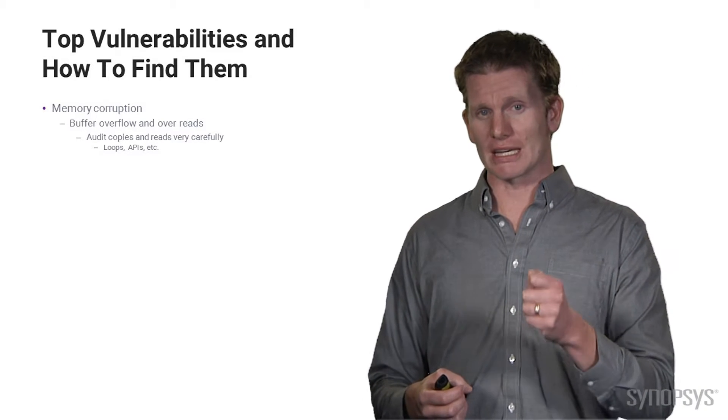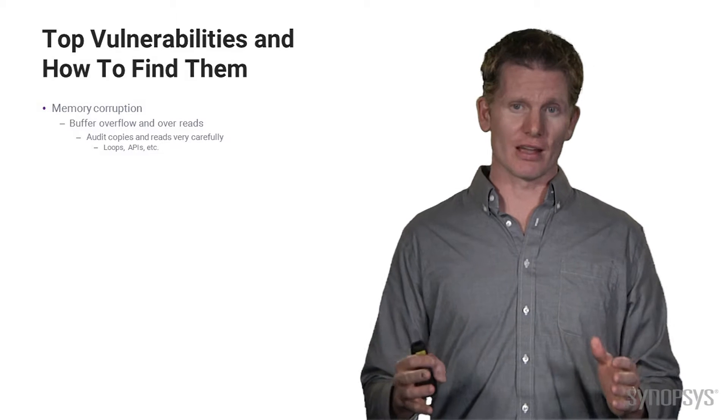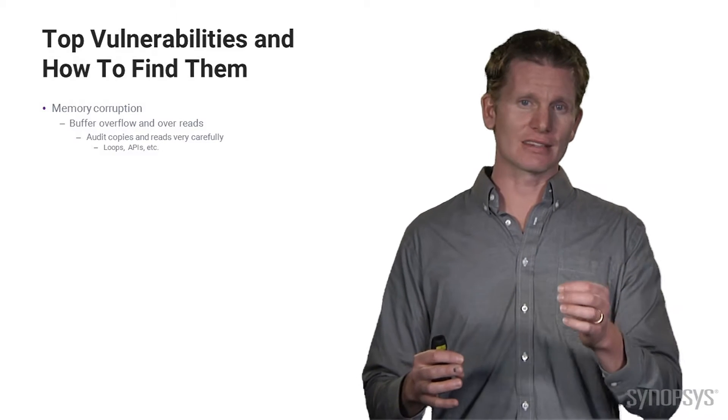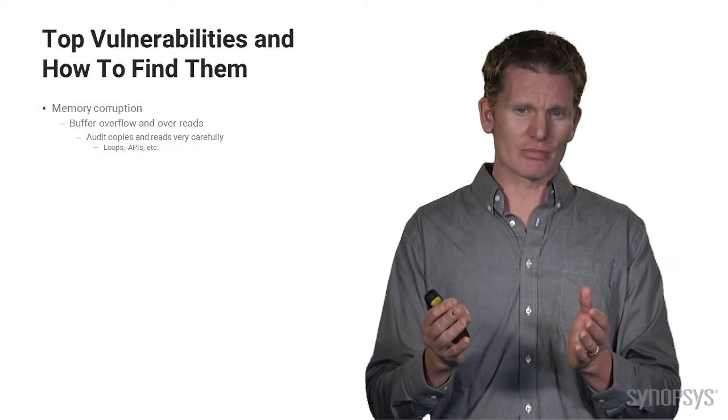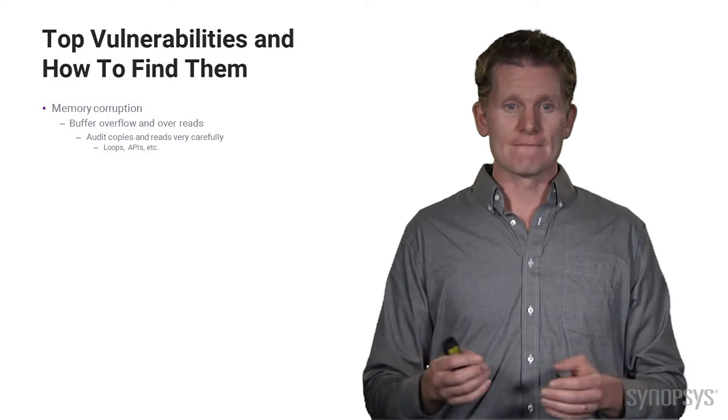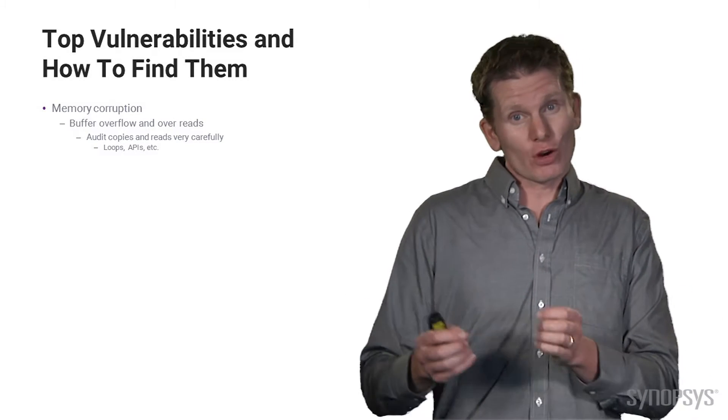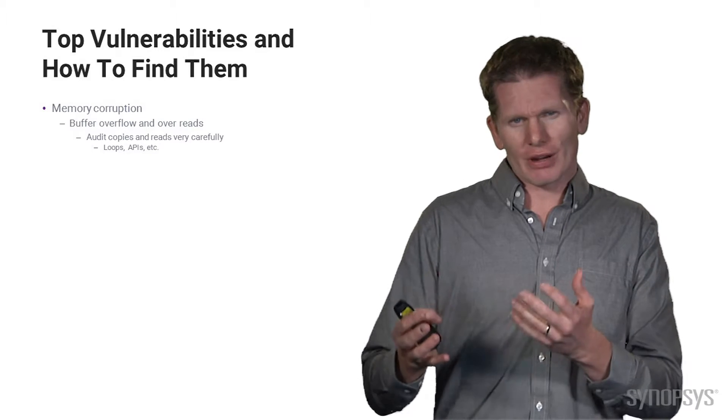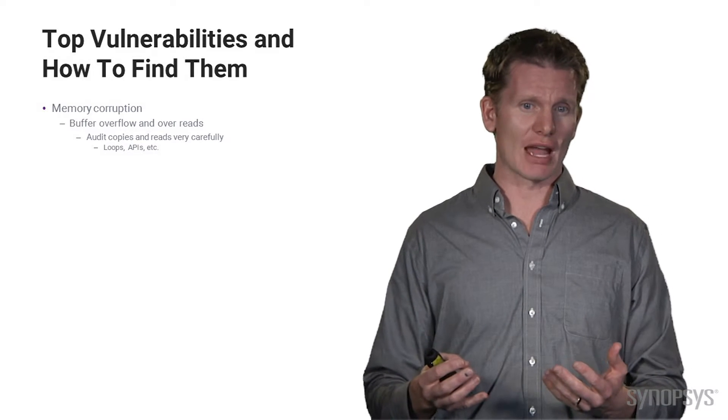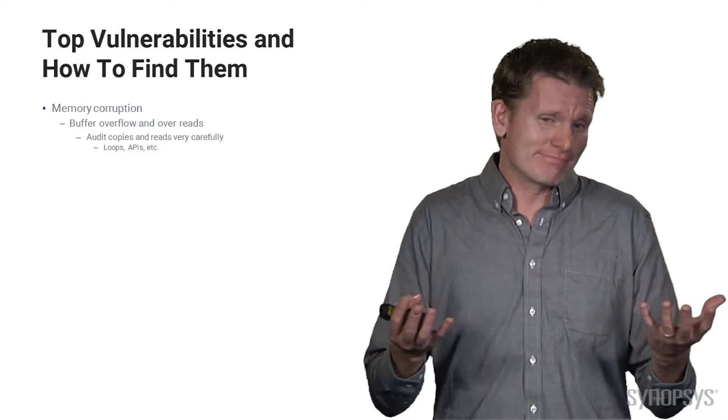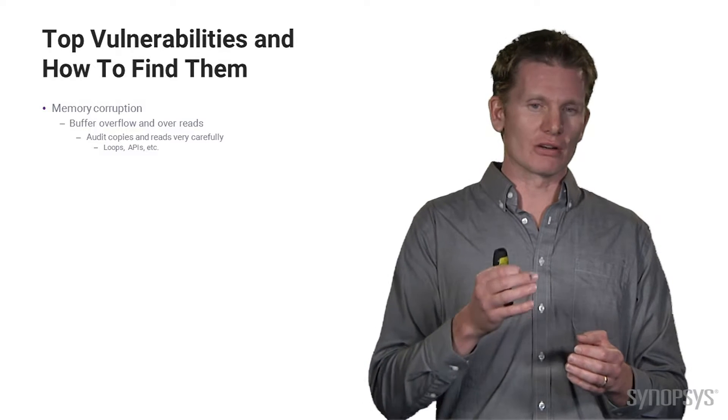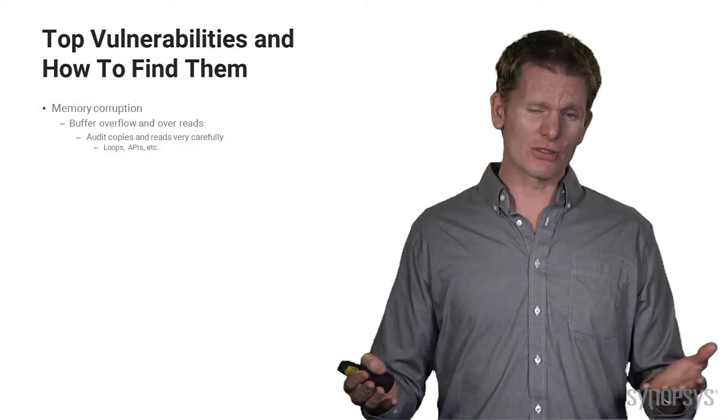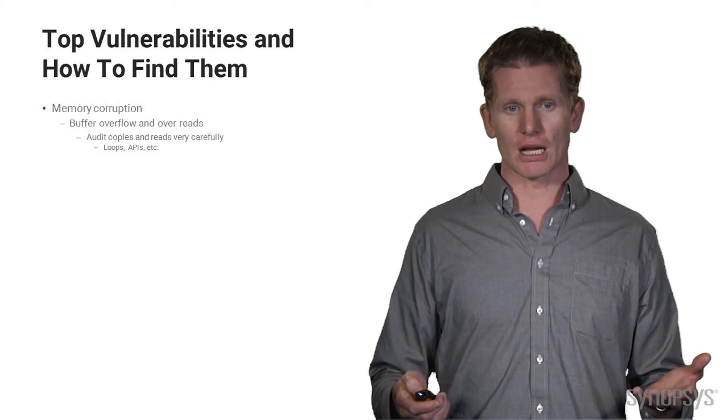Memory corruption is something that's plagued native code for a long time. C, C++, fully compiled code. They've dealt with this thing called memory corruption for a couple of decades. Buffer overflows, buffer overreads, we'll look at an example of that. And you could audit this code manually. You could look through every loop, every API, each situation. But can you really do that across millions of lines of code? Does that really scale?